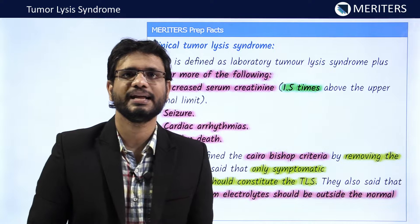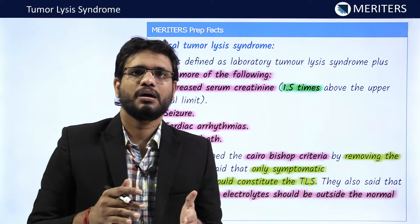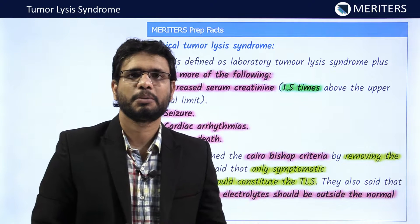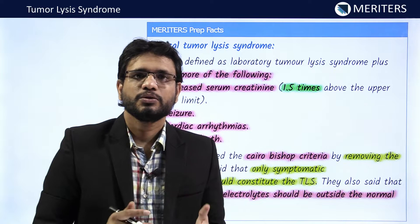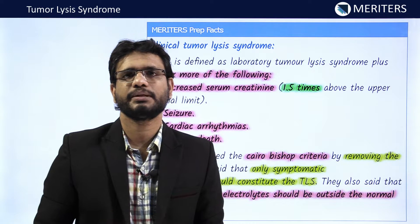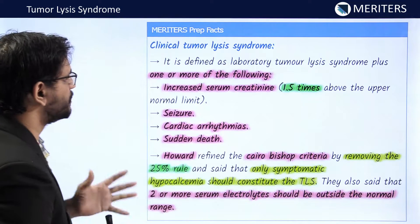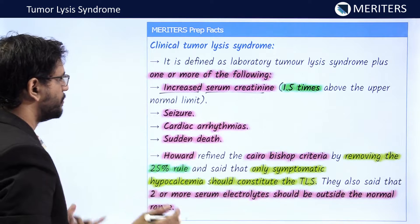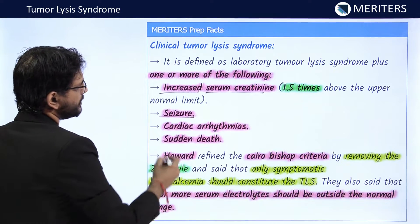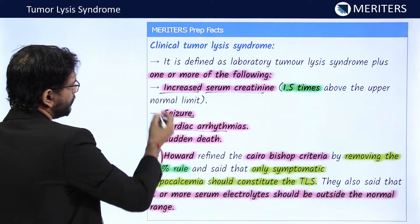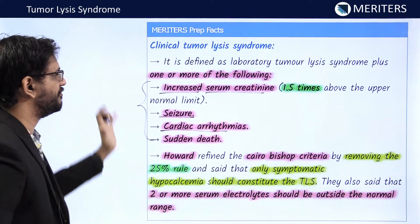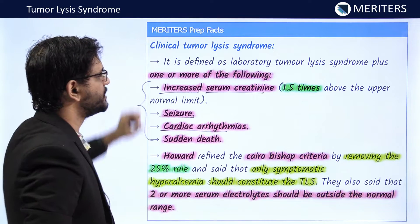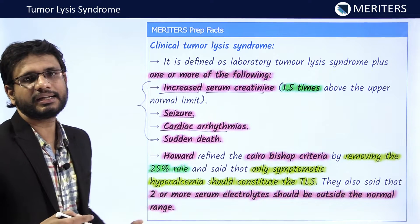For clinical TLS, the laboratory TLS criteria must first be positive — meaning two or more values above defined thresholds. Additionally, one of the following clinical symptoms must also be present: serum creatinine more than 1.5 times the upper normal limit, seizures, cardiac arrhythmias, or sudden death. Meeting one of these four symptoms along with laboratory TLS qualifies as clinical tumor lysis syndrome.